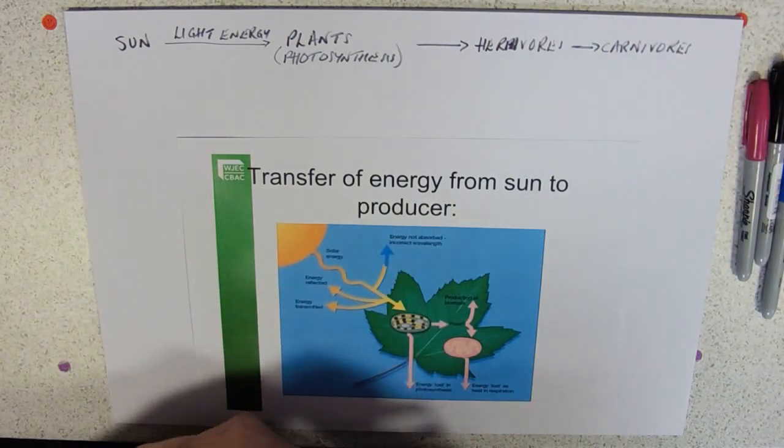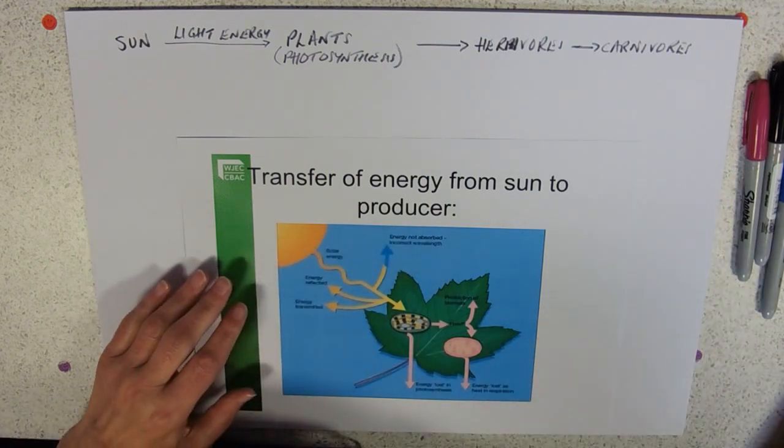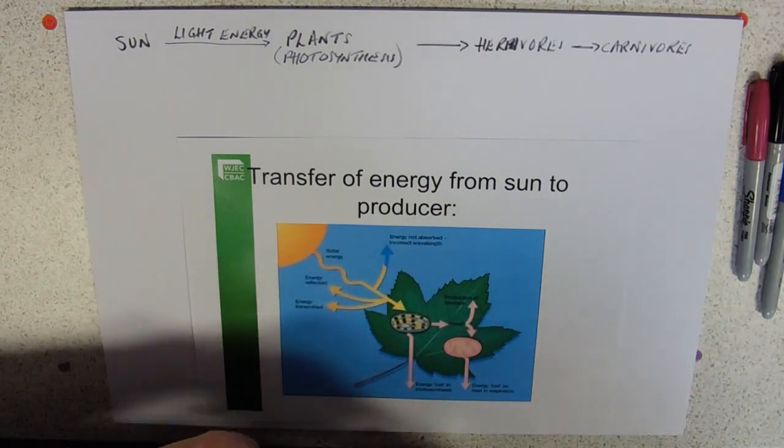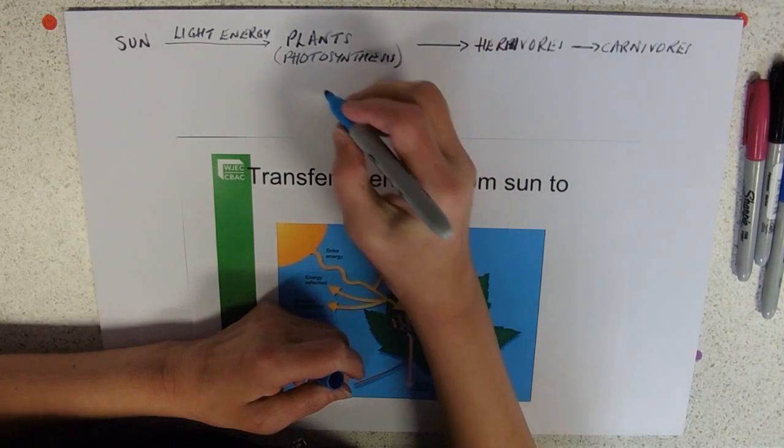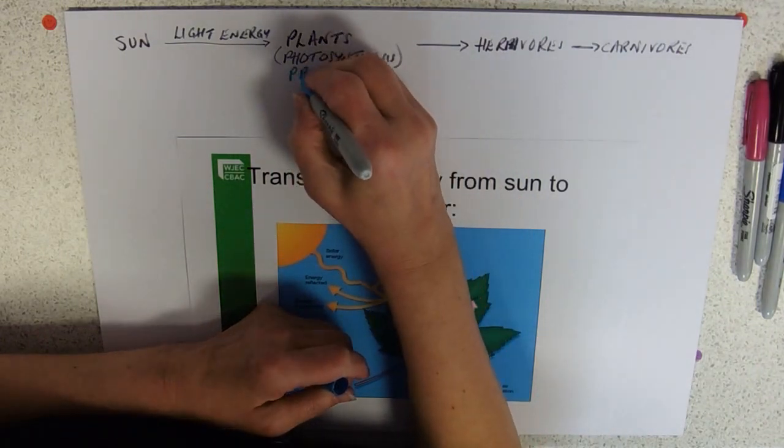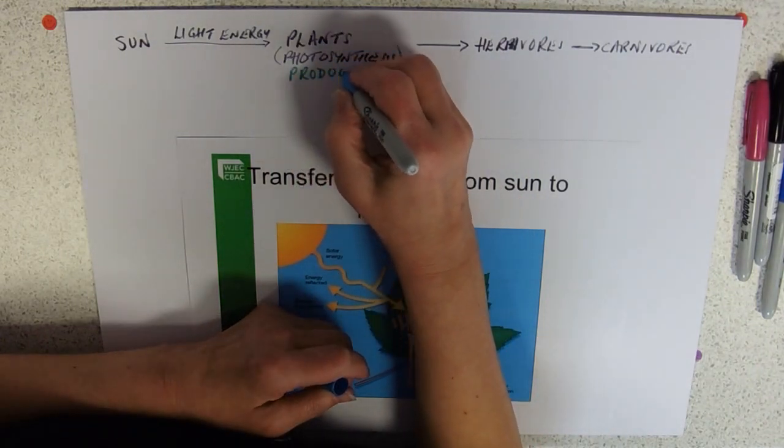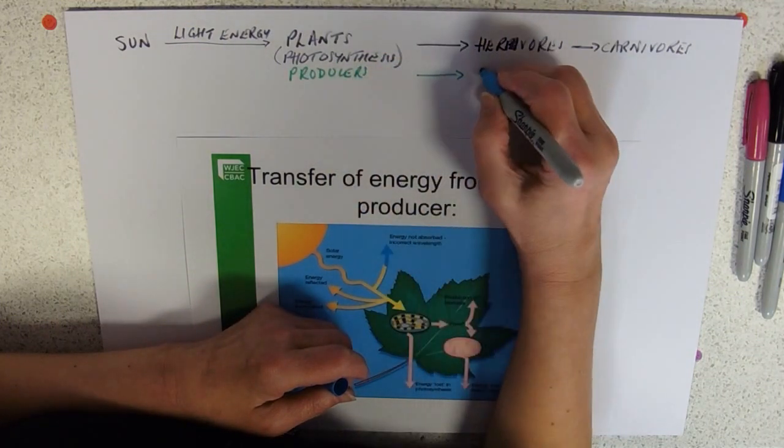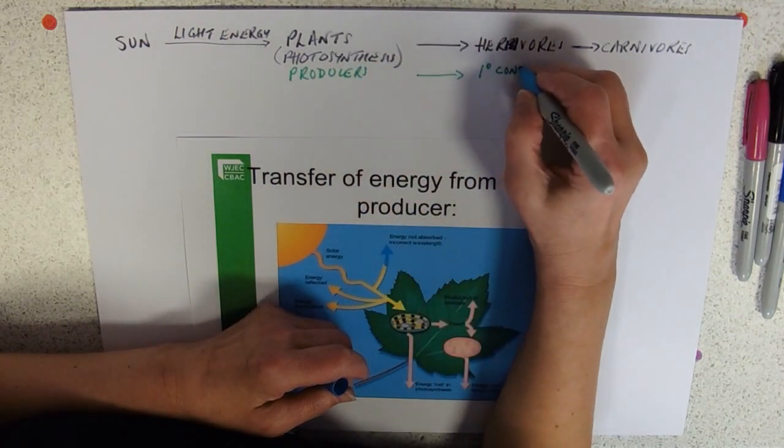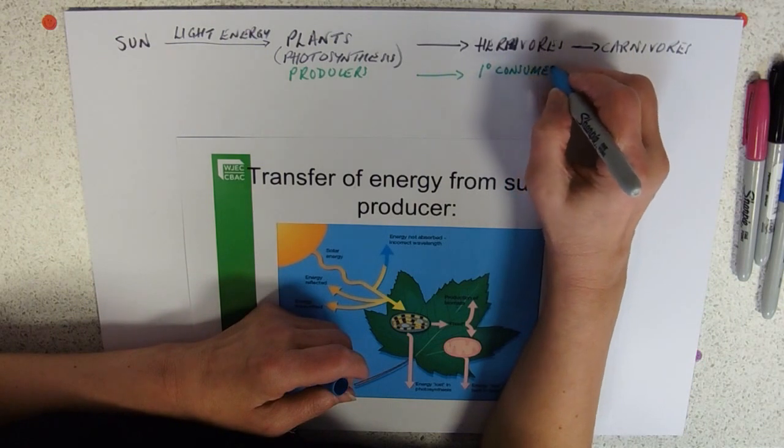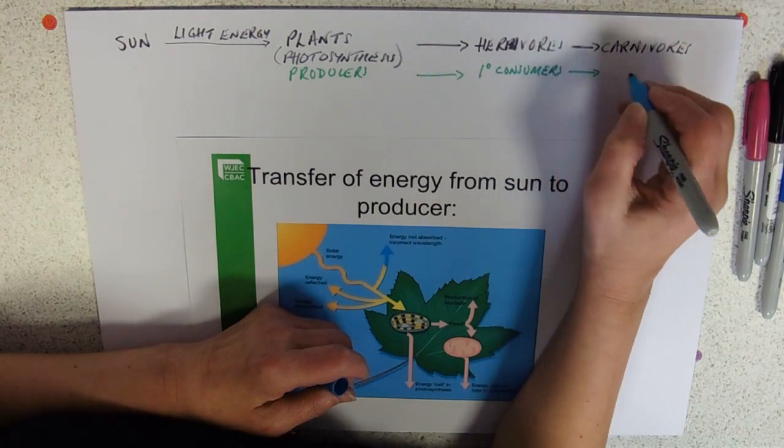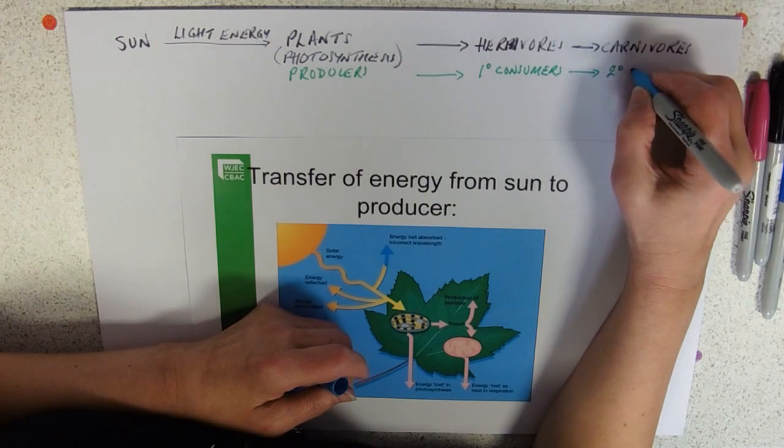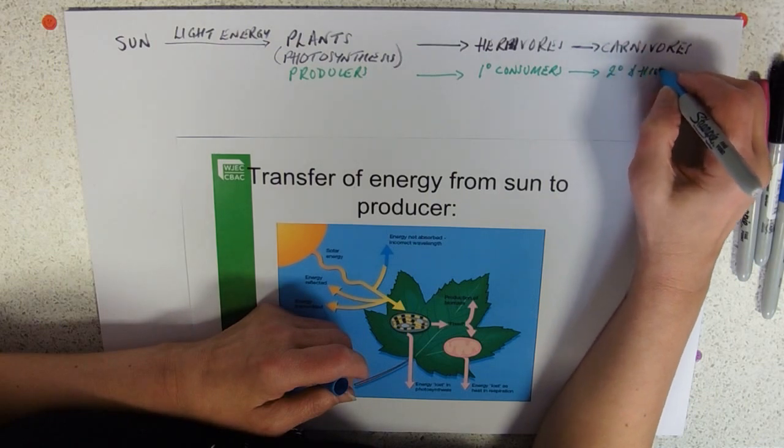To top up to A level, we refer to plants as being producers. Herbivores are then primary consumers. Here we're talking about food chains and on to secondary and higher consumers.